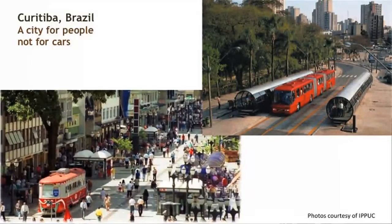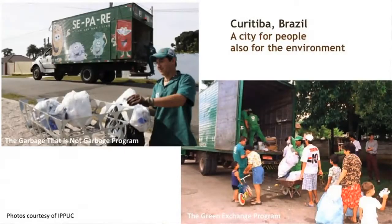Curitiba, a Brazilian city of about 1.7 million people, is a good example. Its bus rapid transit system is cheap and low cost, but so effective that it reduced car traffic by 30% while the population tripled in 20 years. The city also has recycling programs that allow people to be productive — even children can help the community reduce waste and keep it clean.